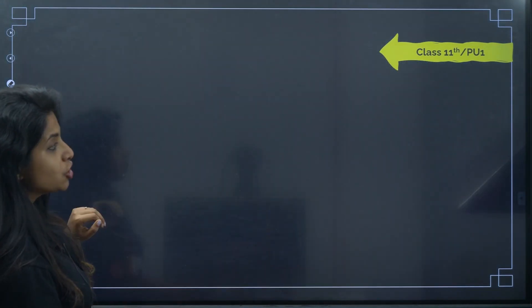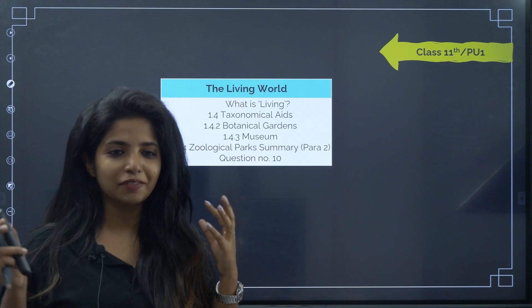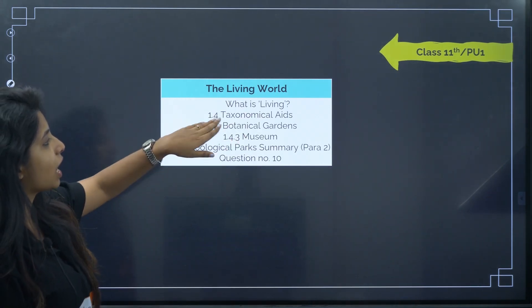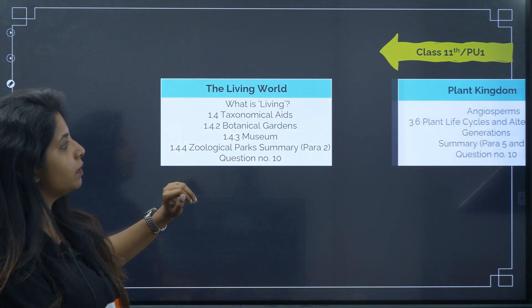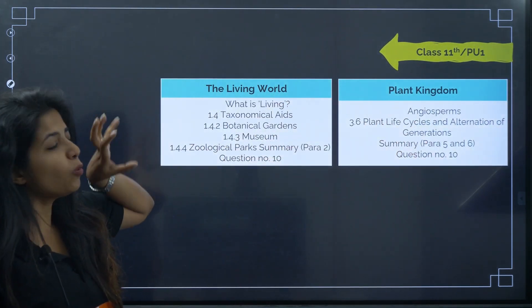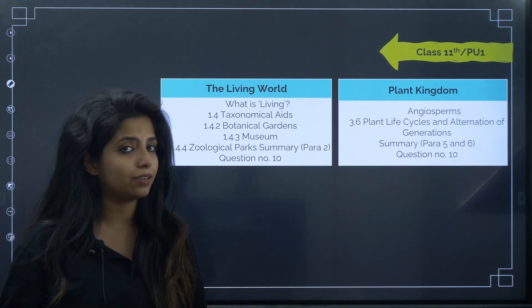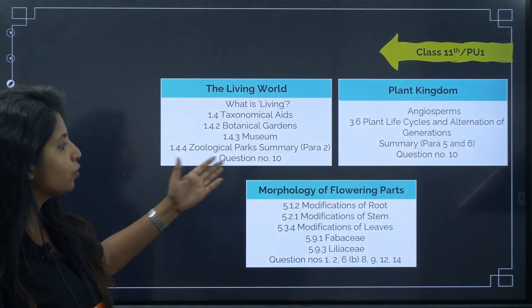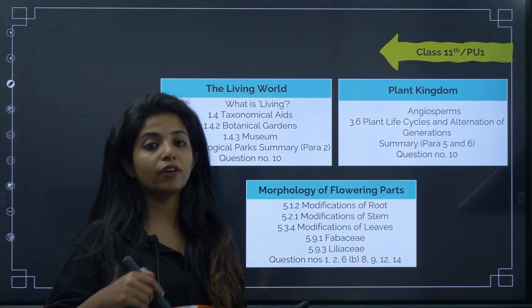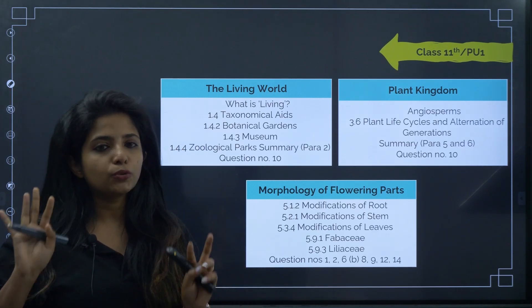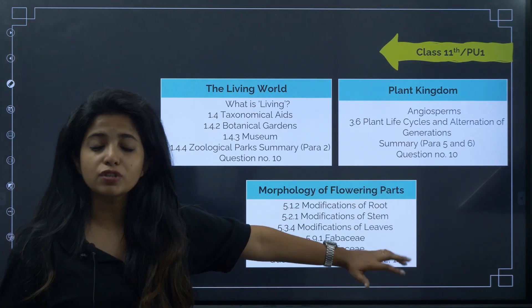In every chapter there are deleted topics, so you can feel relieved even though 19 chapters are there — about half of each chapter may be deleted. In 'The Living World,' 'What is Living,' 'Taxonomical Aids,' and 'Summary Para 2' are deleted. In plant kingdom, many things are deleted. The reason I'm showing these snips is so you pay attention to how much is deleted that you might still be learning unnecessarily.